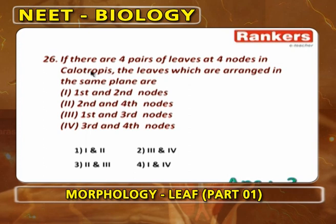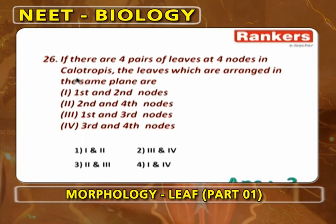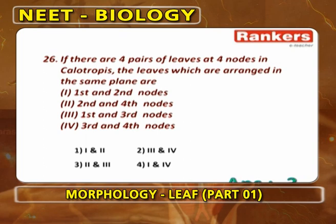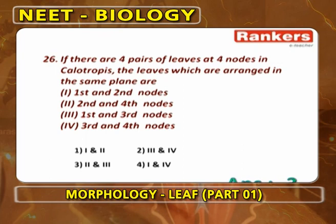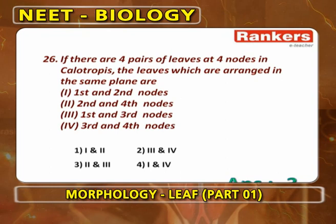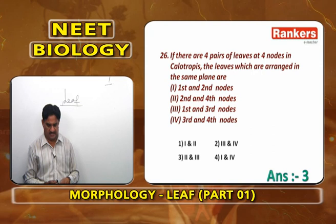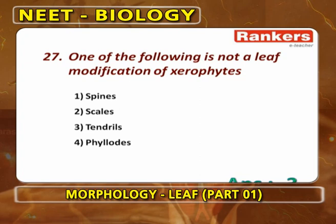If there are 4 pairs of leaves at 4 nodes in Calotropis, the leaves arranged in the same plane are at the 1st and 3rd nodes (superposed), and 2nd and 4th nodes are at right angles to the 1st and 3rd. This is opposite decussate phyllotaxy.